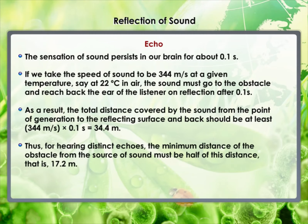Thus, for hearing distinct echoes, the minimum distance of the obstacle from the source of sound must be half of 34.4 meters — that is, 17.2 meters. This distance will change with the temperature of air. Echoes may be heard more than once due to successive or multiple reflections. The rolling of thunder is due to the successive reflections of sound from a number of reflecting surfaces such as the clouds and the land.